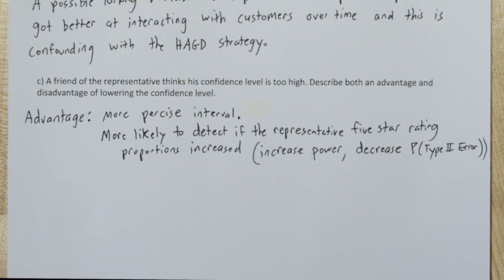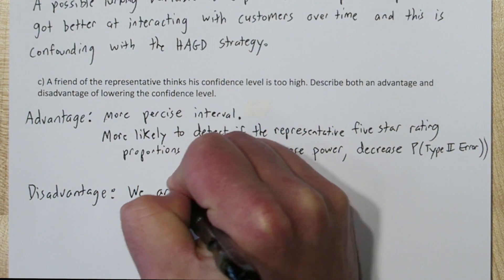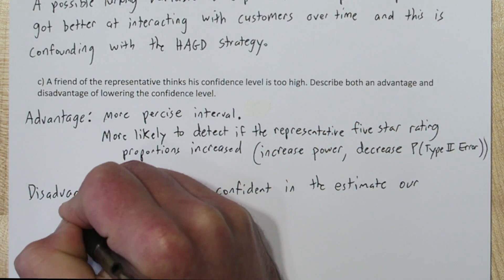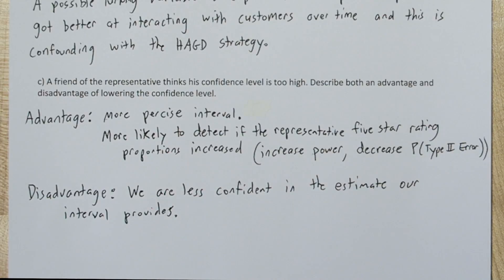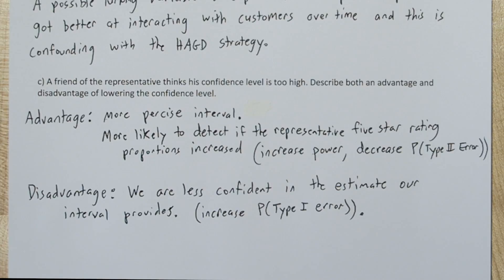But lowering our confidence has disadvantages too. The main one is we'll be less confident in the estimate our interval provides. Which in the significance test equivalent would be an increased probability of a type 1 error, which would be us concluding he did improve his five-star ratings when he in fact did not.